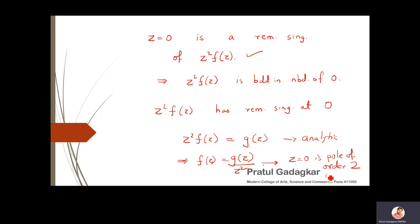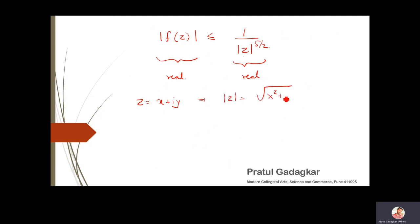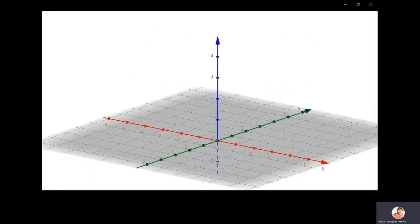To give a graphical understanding: |f(z)| ≤ 1/|z|^(5/2) involves real numbers. Since z = x + iy, |z| = √(x² + y²). We'll look at a graphical representation of this inequality so you can understand how a function satisfying this property should look.